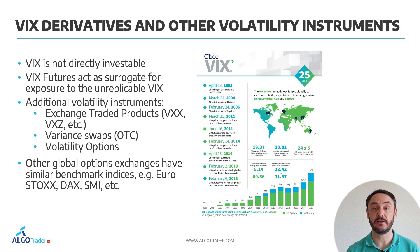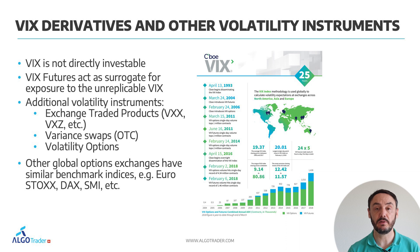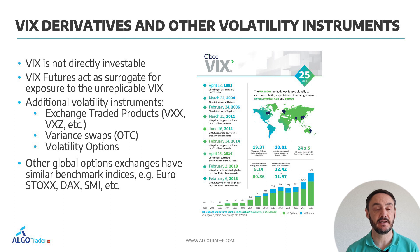So how can you invest in volatility? The VIX itself is not directly investable. However, there are VIX futures you can trade. Those futures act as surrogates for exposure to the unreplicable VIX. Other alternatives are exchange-traded products like the VXX or the VXE. Also, there are variance swaps, which are traded over the counter — so not on an exchange, but through brokers. And then, obviously, there are also volatility options available. In addition to the VIX, many other global exchanges have also launched similar benchmark indices, like the volatility index on the Euro Stoxx, the DAX, the SMI, and so forth.